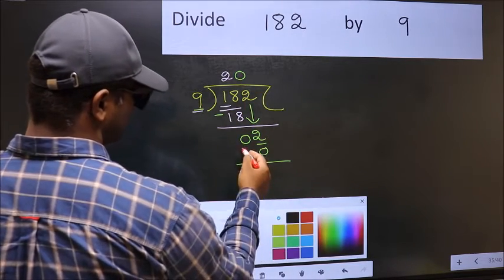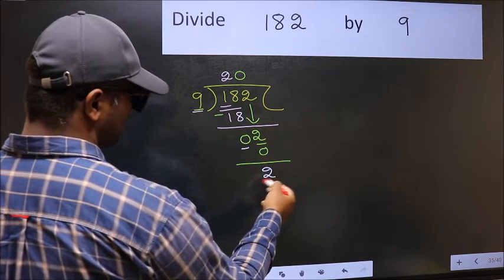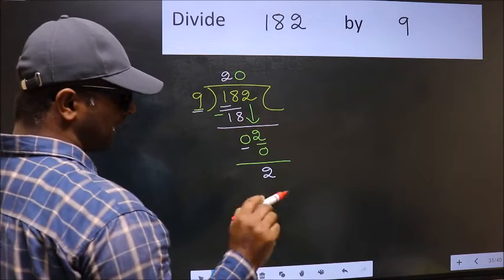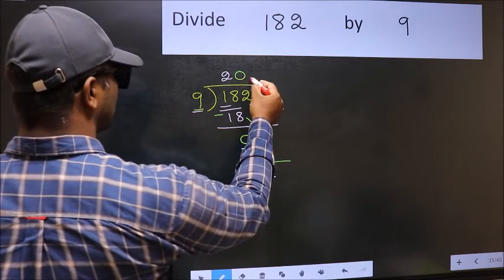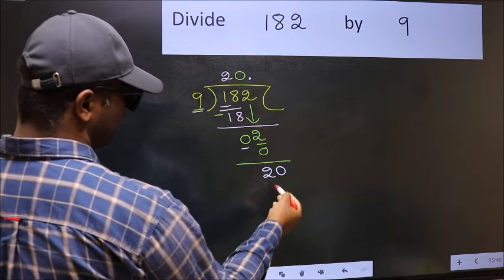Now, we should subtract. 2 minus 0 is 2. Over here, we did not bring any number down. And 2 is smaller than 9. So, now you can put dot and take 0. So, 20.